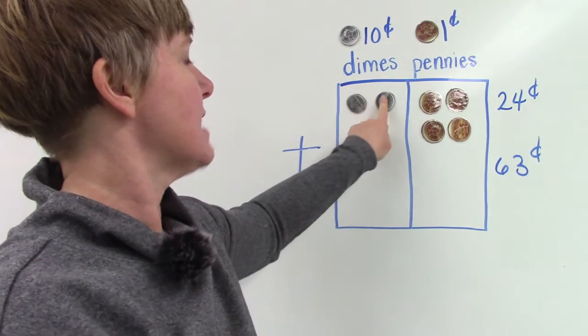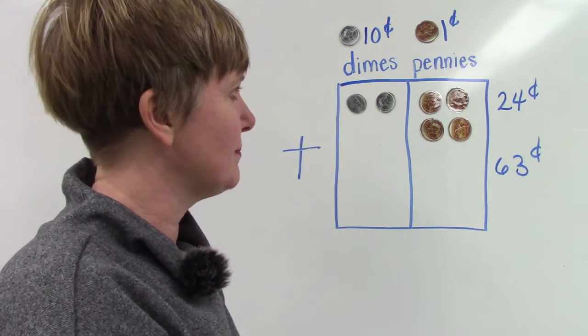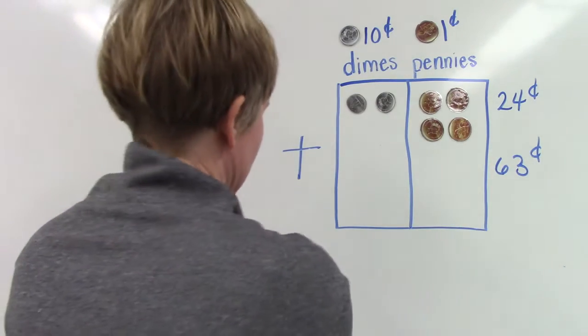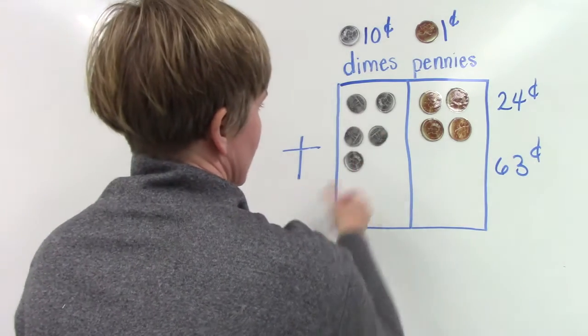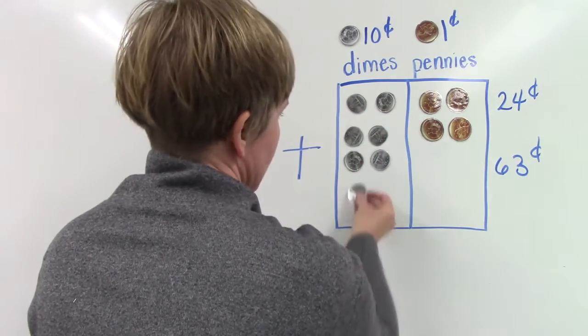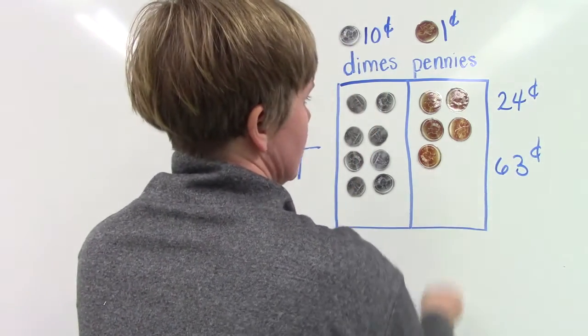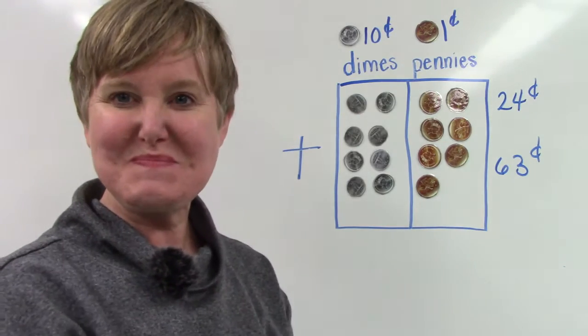10, 20, 21, 22, 23, and 24. And now we're going to add 63: 10, 20, 30, 40, 50, 60, 61, 62, and 63.